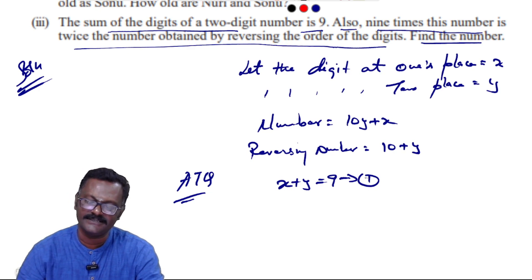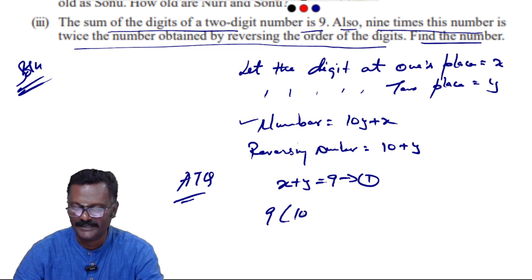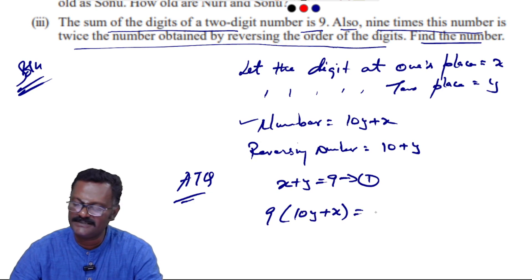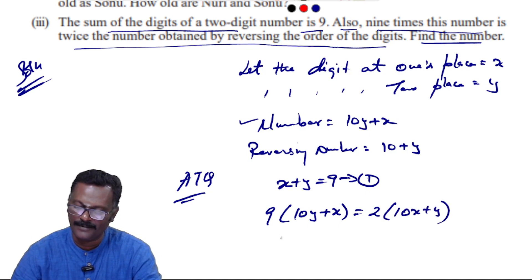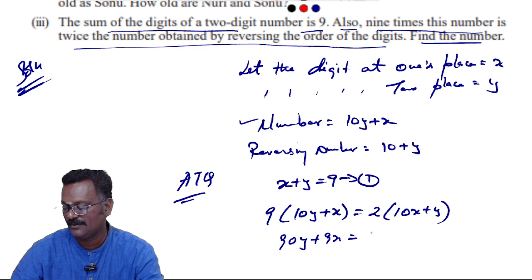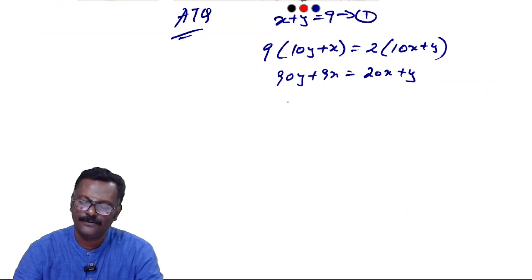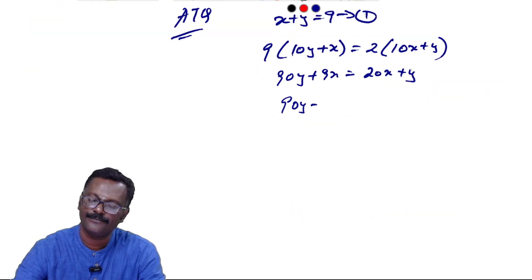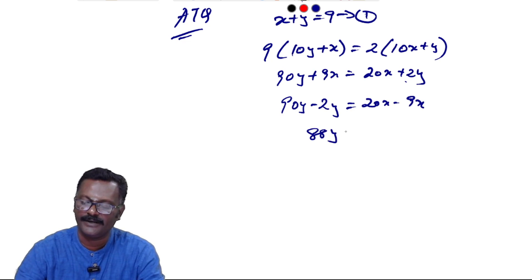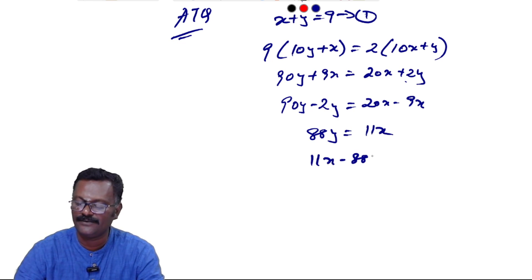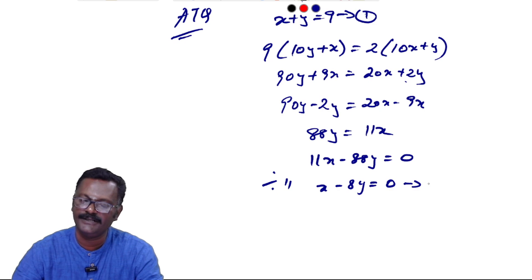According to the question, the sum of the digits equals 9: x + y = 9. That is equation one. Also, 9 times the number equals twice the reversed number: 9(10y + x) = 2(10x + y), giving 90y + 9x = 20x + 2y, so 88y = 11x, meaning 11x - 88y = 0. Dividing by 11: x - 8y = 0. That is equation two.